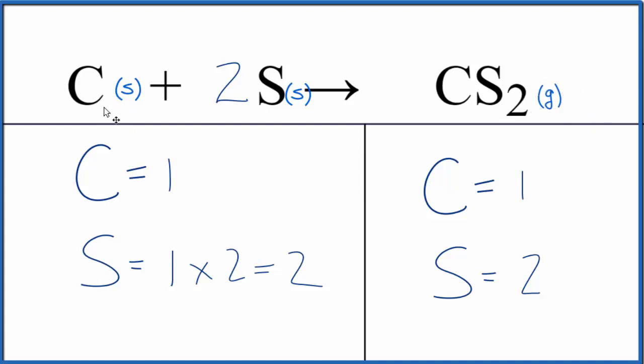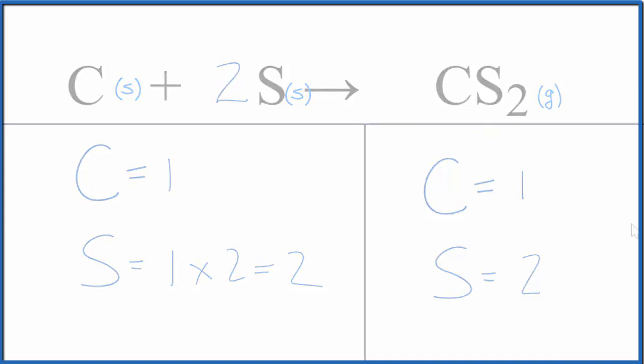This is Dr. B with the balanced equation for C plus S yields CS2. Carbon plus sulfur yields carbon disulfide. The type of reaction, that's going to be a combination because the carbon and sulfur, they combine to form the CS2. Thanks for watching.